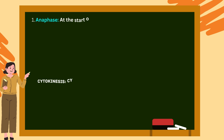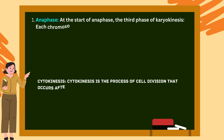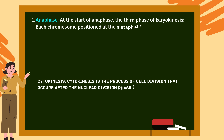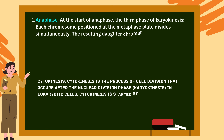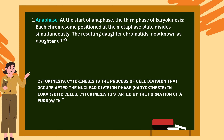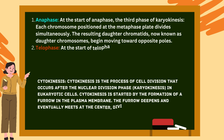Third is anaphase. At the start of anaphase, the third phase of karyokinesis, each chromosome positioned at the metaphase plate divides simultaneously. The resulting daughter chromatids, now known as daughter chromosomes, begin moving toward opposite poles.